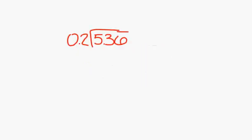The next problem is 5 and 36 hundredths divided by 2 tenths. You have to make 2 tenths a whole number. You can do this by moving the decimal over one place to the right. But now you have to do that to the second number as well, so your new problem is 53 and 6 tenths divided by 2.